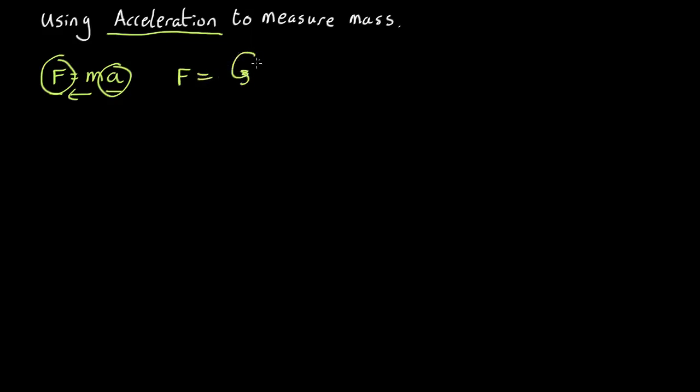Force equals G mass of the two interacting objects over distance squared. Set them equal to each other, and we find that the acceleration of an object is GM over r squared.